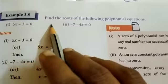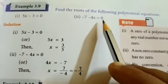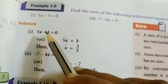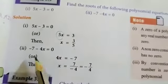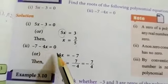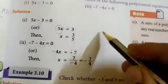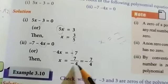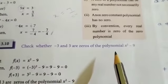Example 3.9: Find the root of the following polynomial equations. First sum: 5x minus 3 equal to 0, so 5x equal to 3, giving x equal to 3 by 5. Second sum: minus 7 minus 4x equal to 0, so minus 4x equal to 7, rearranging gives x equal to minus 7 by 4.